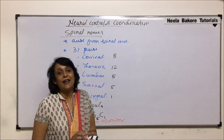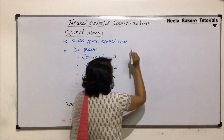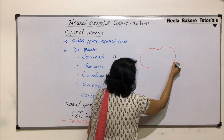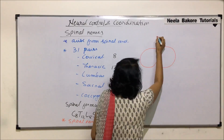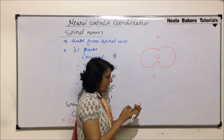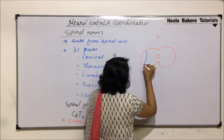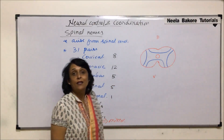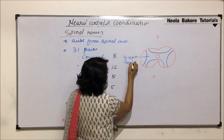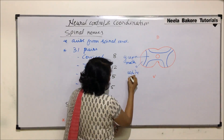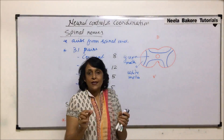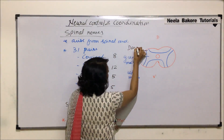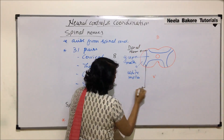Each spinal nerve arises from the spinal cord through two roots. Let us make a diagram of the spinal cord to see how these spinal nerves actually originate. This is the dorsal side, this is the ventral side, here is the canal, and the gray matter inside is in the form of the English alphabet H, or butterfly shape. The outer region is white matter. The extensions of gray matter on the dorsal side are called dorsal horns, and those on the ventral side are called ventral horns.